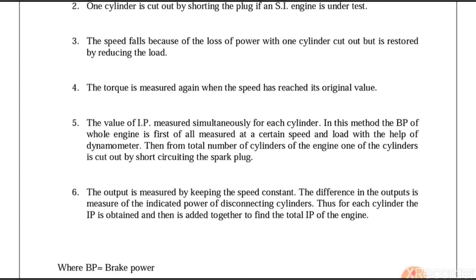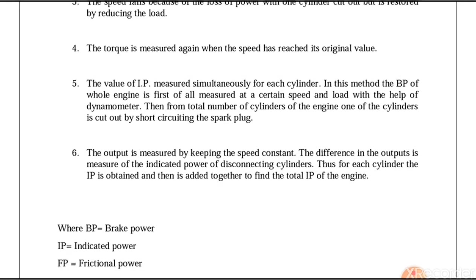The speed is going to be reduced because of loss of power with respect to the cut-out in cylinders. At this time the torque needs to be measured again once the speed has reached its original value. Then the value of indicated power is measured for all the cylinders. In this method the BP of the whole engine is first measured at a certain speed and load with the help of a dynamometer.